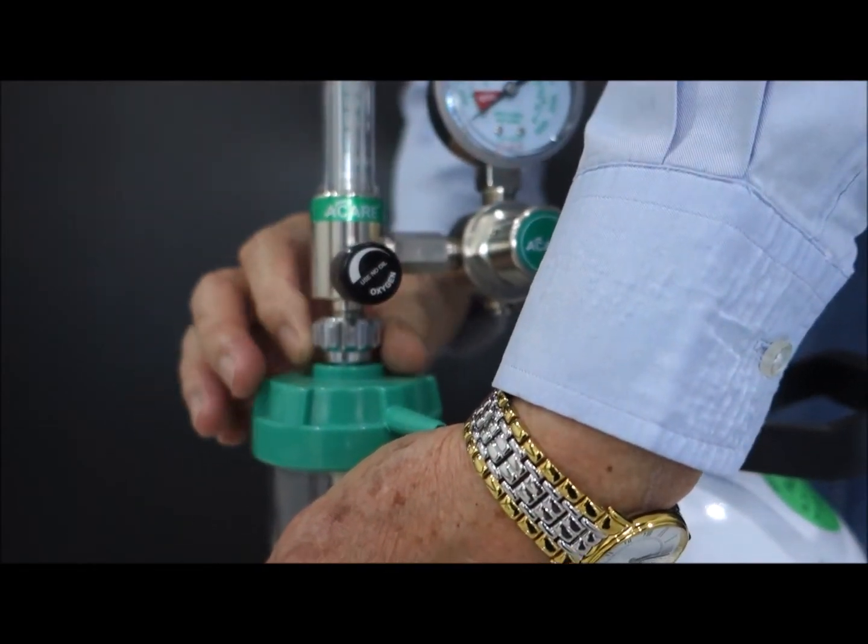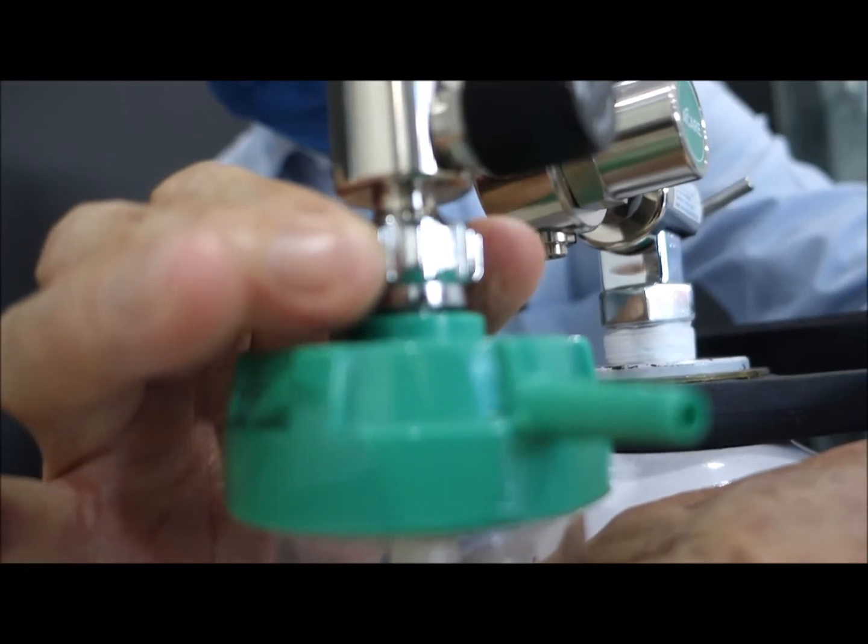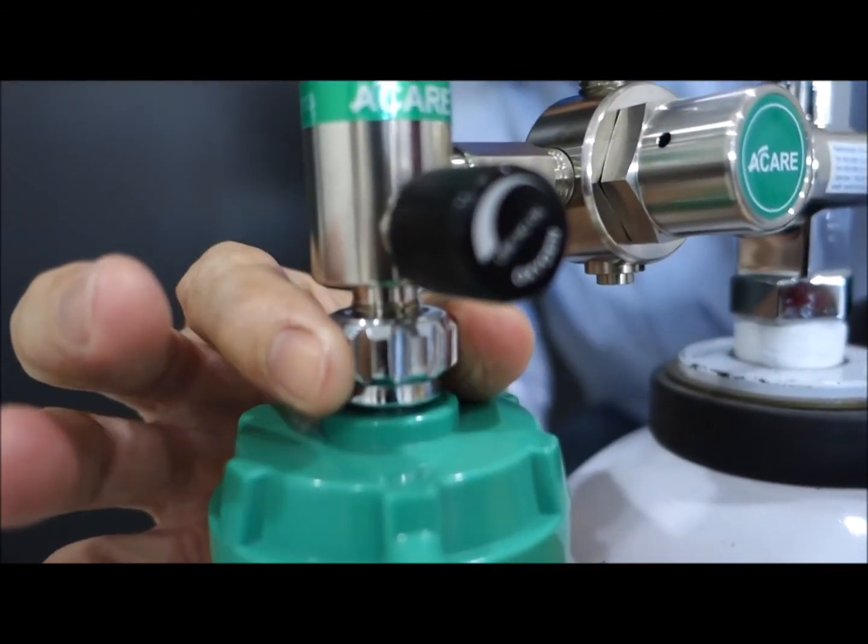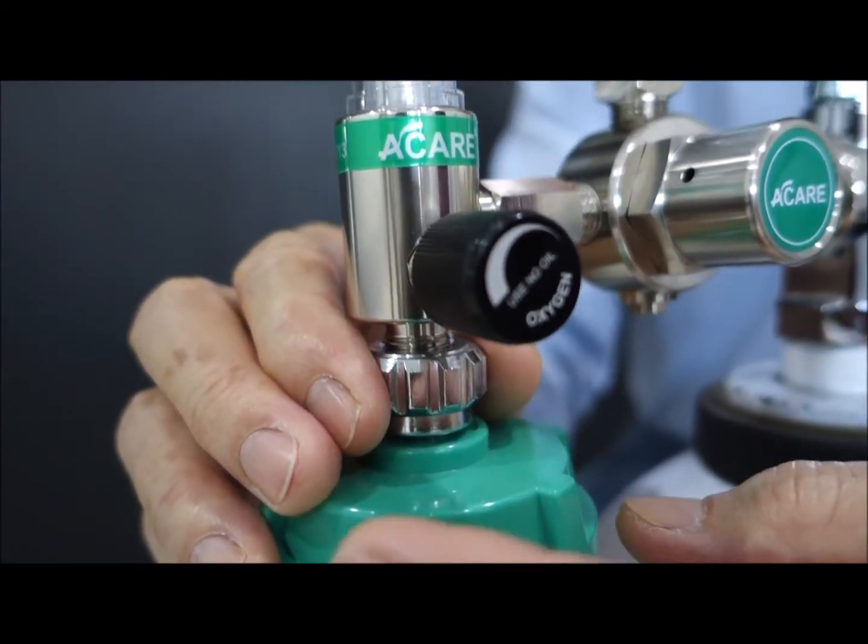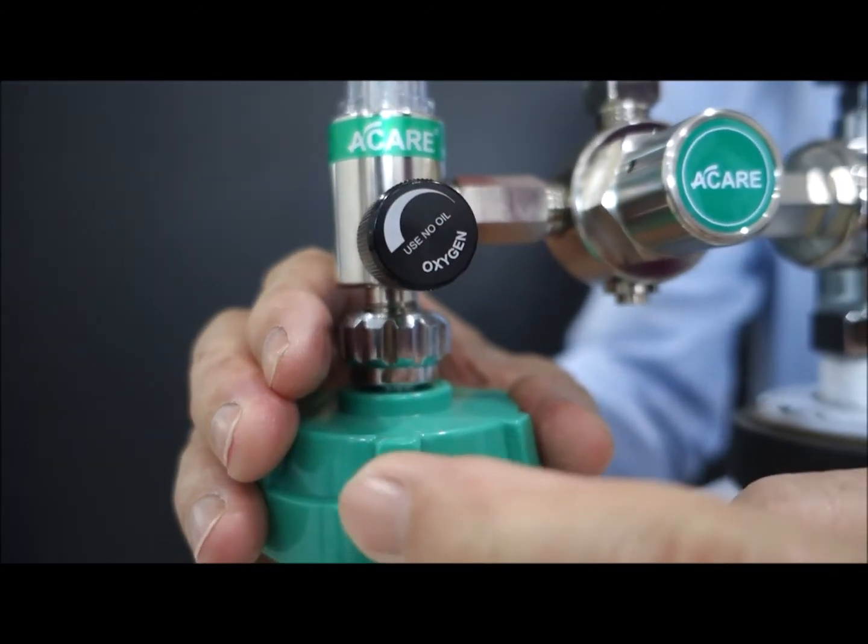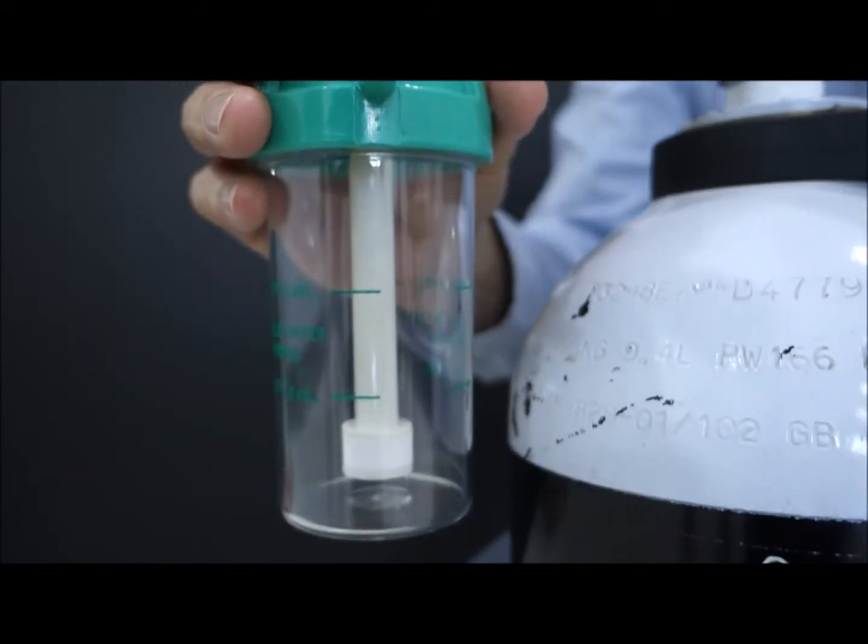If you look down there, it's going to be clockwise disc, anti-clockwise to turn on to connect the humidifier to the flow meter. And this is the nozzle here, where you connect to your face mask or your nasal cannula.